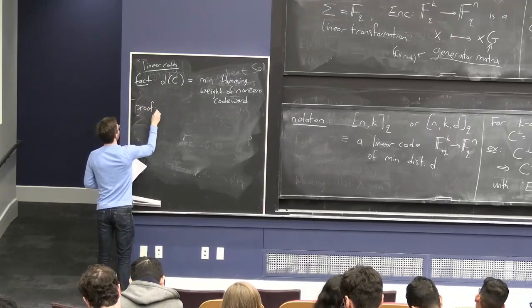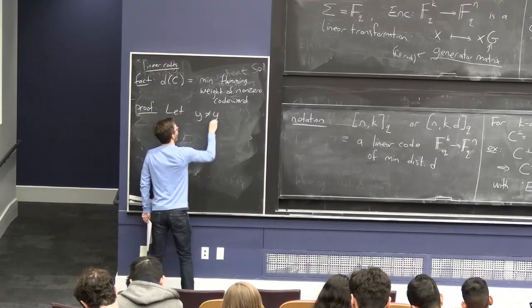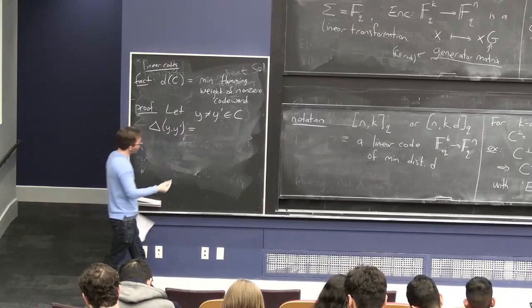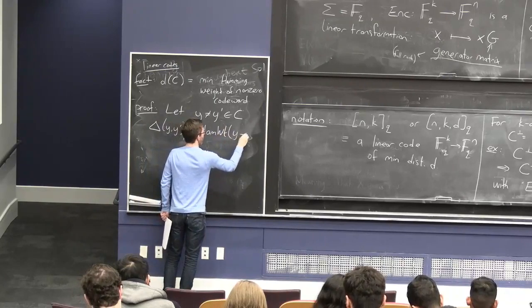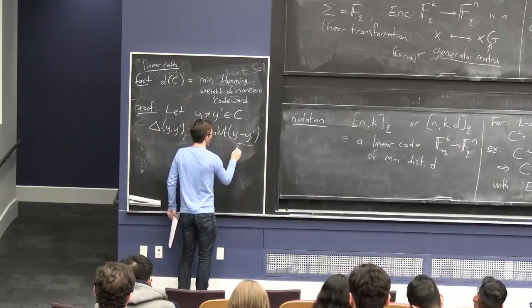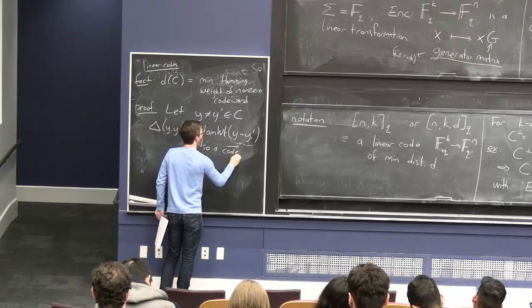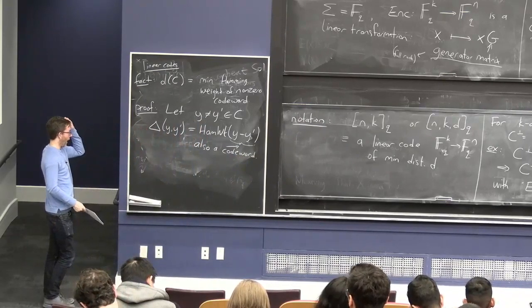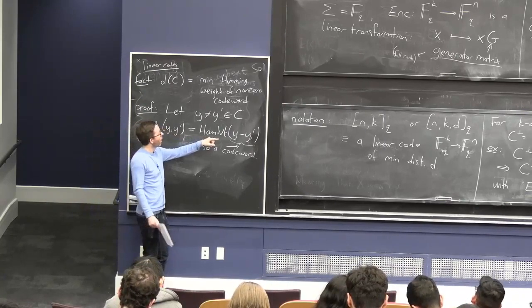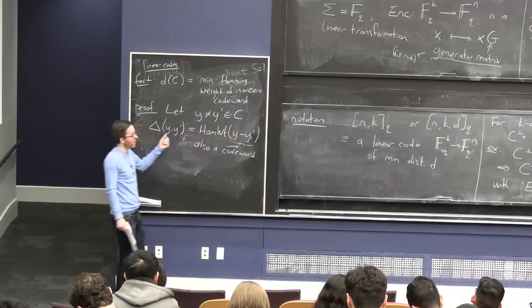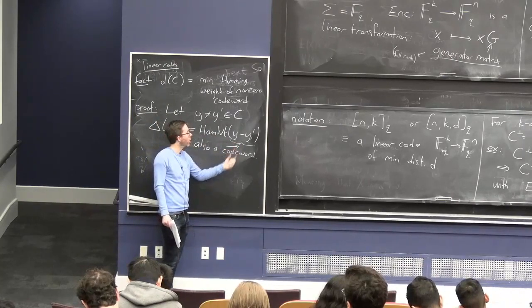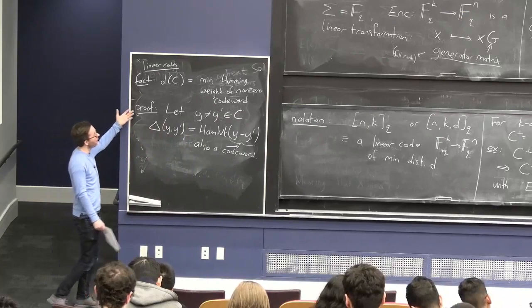Why? If you have two distinct codewords y and y', the distance between them is the Hamming weight of their difference. Since they're vectors, we can subtract them. The difference between any two codewords is also a codeword by linearity. So two distinct codewords with certain Hamming distance give a codeword whose Hamming weight equals that distance. Conversely, any codeword corresponds to pairs of codewords with that difference.